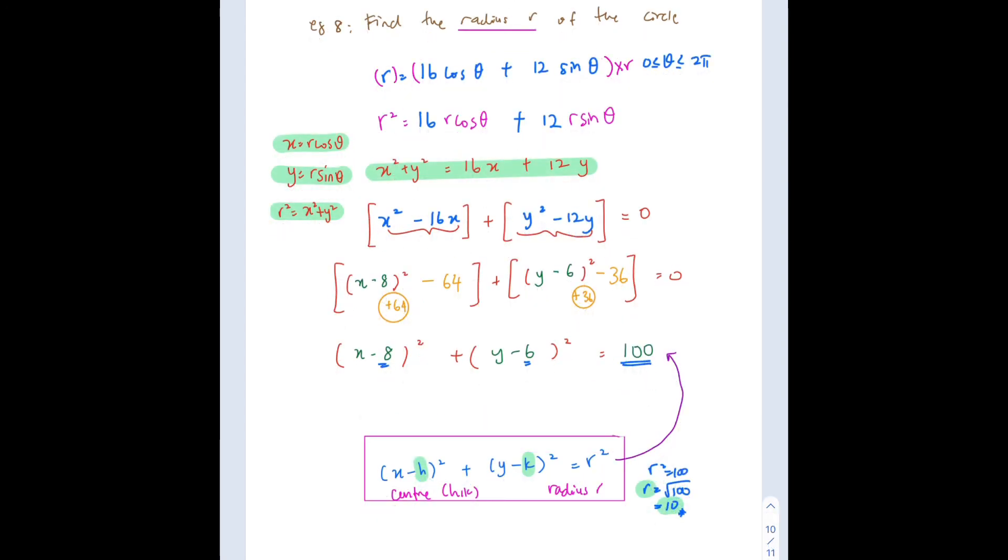So now let's compare our equation with whatever we have. This is our h, our k and this is our R squared. So now let's write our center. This is 8, 6. And then let's write our radius. R squared is 100. So R is square root of 100. Therefore, your R now is equal to 10. So this is our final answer.